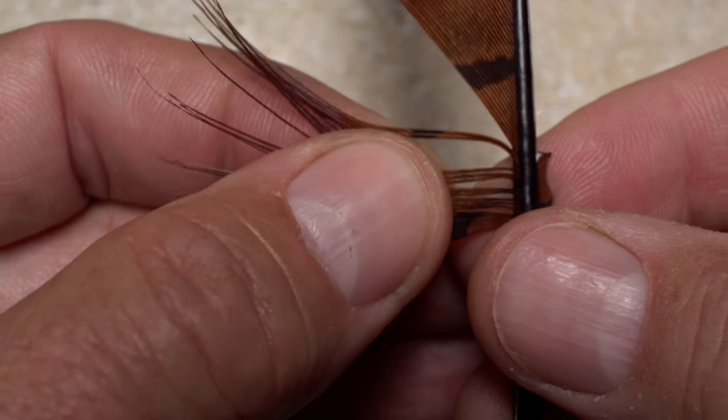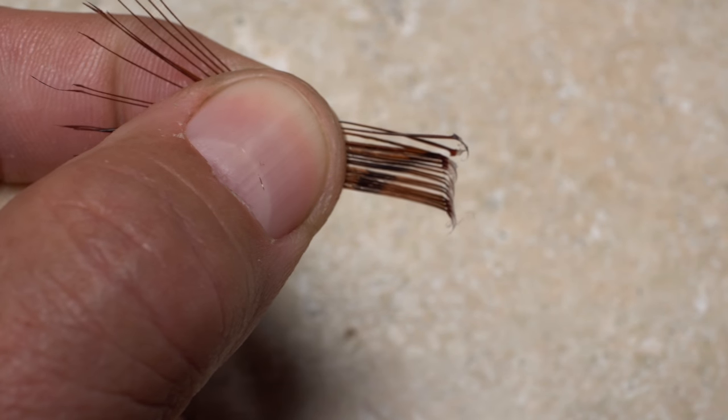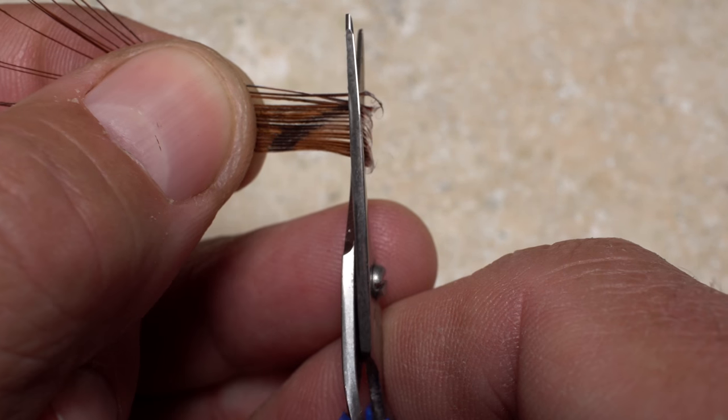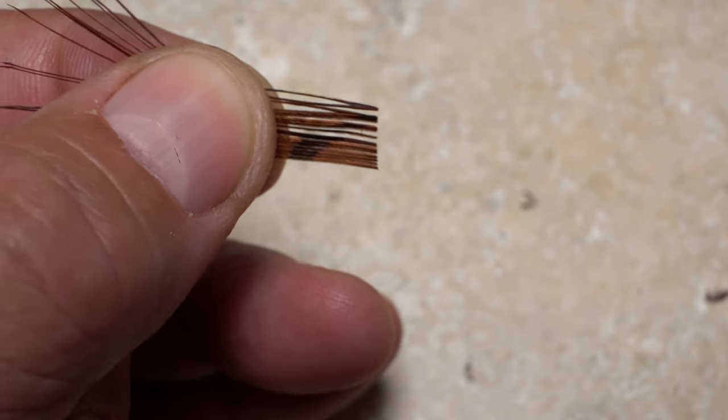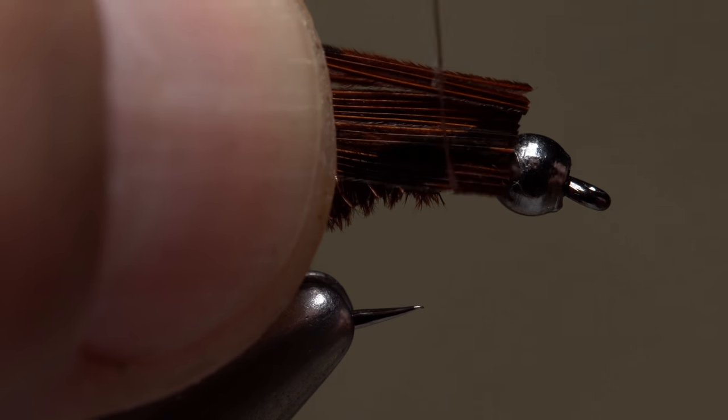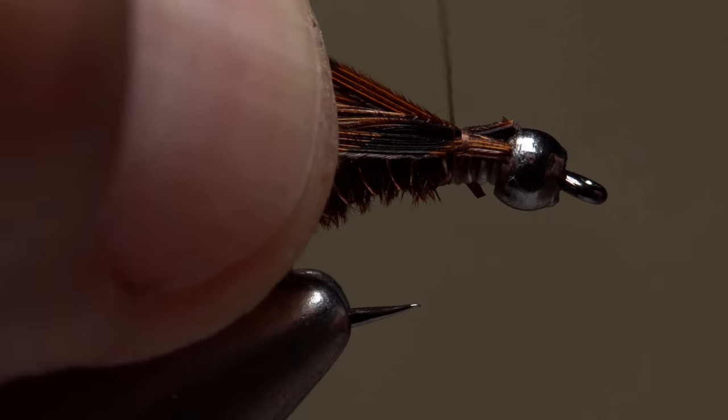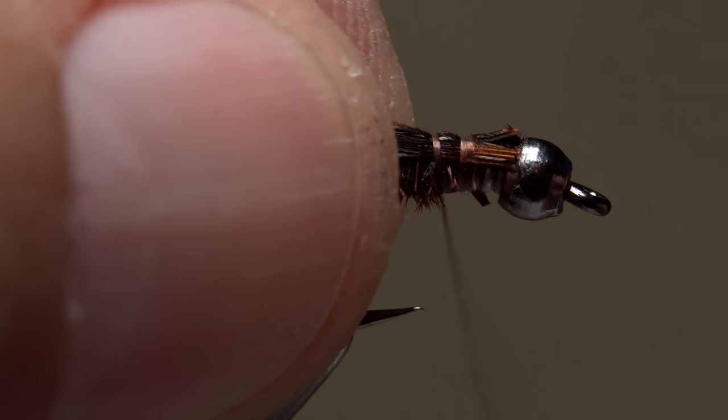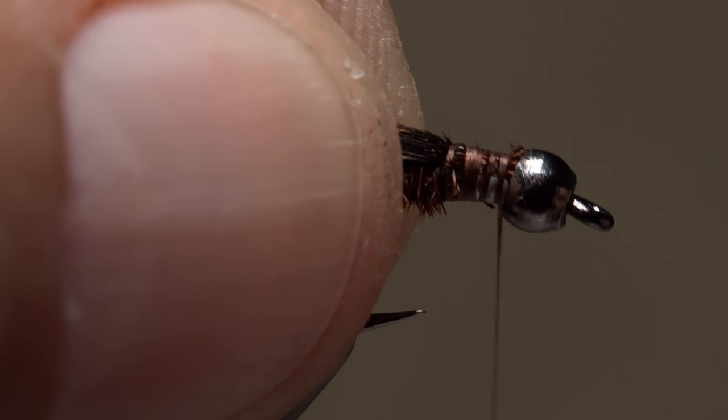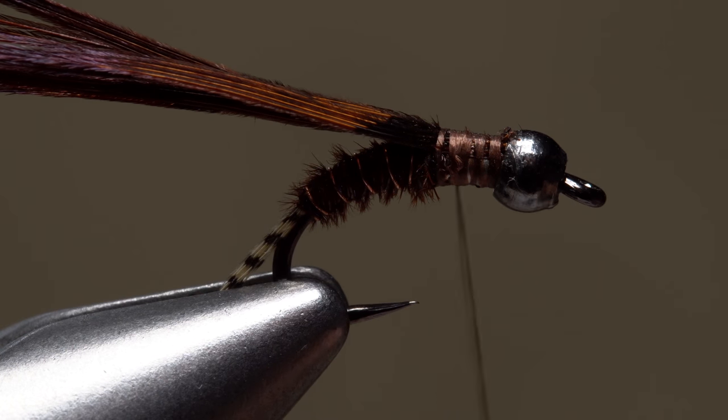On the shorter, webbier side of the pheasant feather, strip a dozen or so fibers free from the stem. Here too it's a good idea to snip off the curlies. With the fibers somewhat spread out, allow them to roll over top of the hook to create a nice wide wing case. Then take wraps of tying thread to bind them down tight.